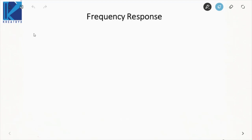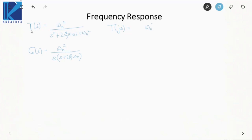In frequency response, the second order system matters a lot. The closed loop transfer function T(s) is omega_n squared divided by (s squared + 2*zeta*omega_n*s + omega_n squared), and the open loop transfer function is omega_n squared divided by s*(s + 2*zeta*omega_n). When converting to frequency domain, we substitute j*omega for s, giving omega_n squared divided by (omega_n squared - omega squared + 2*j*zeta*omega_n*omega).